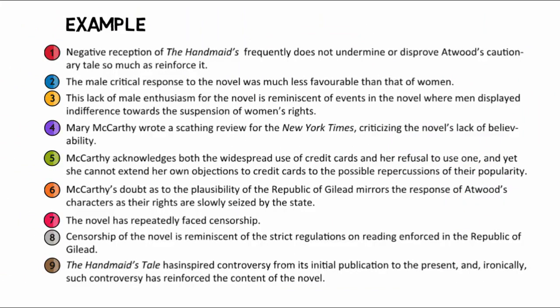In this first outline, most of the paragraphs adequately express the points that the essay is trying to communicate, which is that the reception to The Handmaid's Tale strengthens the points made in the novel. Points two and three relate to how negative male reception to the novel mirrors the attitudes of men in the story. Points four and six address how doubts that the events in the novel could really happen are similar to the doubt and lack of interest in politics found in the story. Points seven and eight cover censorship of the novel and of books in the story. Point nine restates the thesis. Point five talks about credit cards and does not fit with the rest of the essay, so we should consider revising that paragraph.